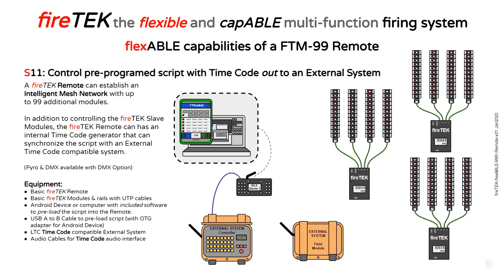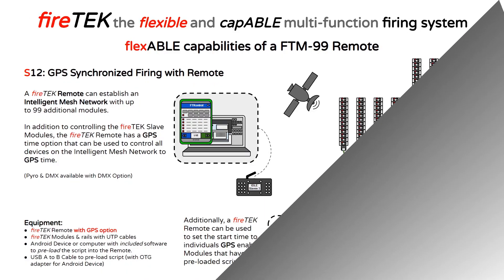The FireTech remote can establish an Intelligent Mesh network with up to 99 additional modules. In addition to controlling the FireTech slave modules, the FireTech remote has an internal timecode generator. This can be used to synchronize additional systems to the FireTech system. In this diagram, the remote is providing a timecode signal to the external system, allowing both systems to be synchronized.